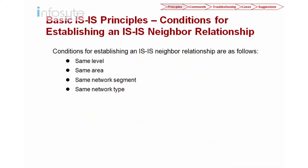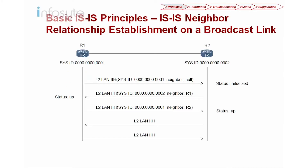Next, we are looking into the conditions to establish an ISIS neighbor relationship. What will be the condition if we are using the same level, same area? What will happen if you are using broadcast versus point-to-point, whether different or same? We are going to examine this relationship.